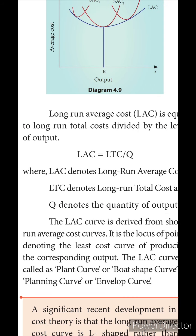What is the another name for the long run average cost? They have given it four names: it is called the plant curve, the boat-shaped curve, the planning curve, and the envelope curve. These are all the names the long run average cost is known by.